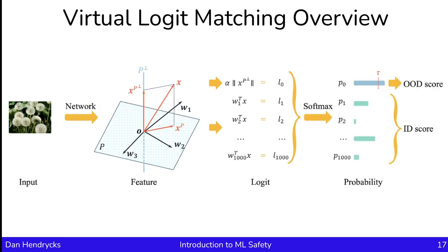A way to capture information about what's typical or atypical in the feature embedding space is with PCA. The idea is to take training examples, look at their embeddings, and perform PCA. The top PCA principal components define a space, and we look at the space orthogonal to that principal embedding space—treating that as the unusual space, written p-perp. This can give rise to a virtual logit, which is proportional to the magnitude of the projection of the embedding onto the space orthogonal to the principal embedding space. The more the embedding lives in that orthogonal space, the more unusual it is. This virtual logit is fed into a softmax function, which can give rise to an OOD score.